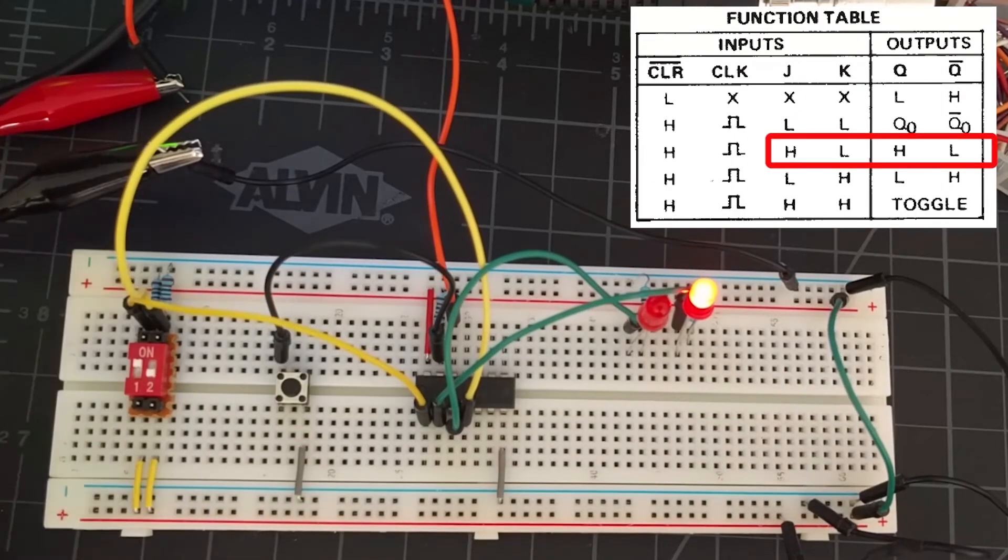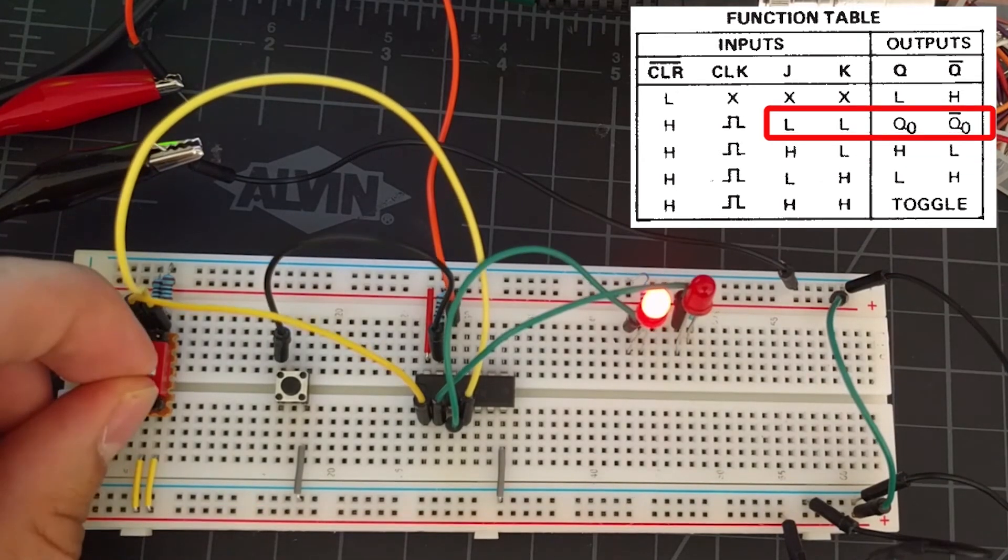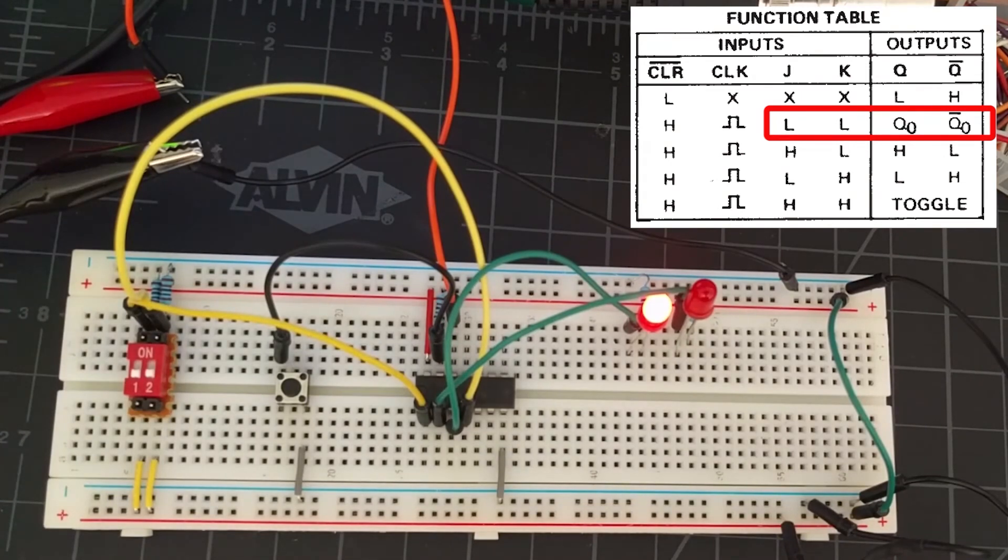We'll first set J high and K low, which will in turn cause Q to be high. Then, we'll set J and K back to low for our memory state.